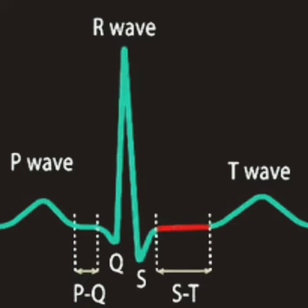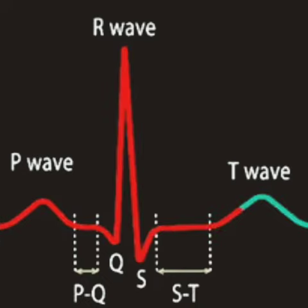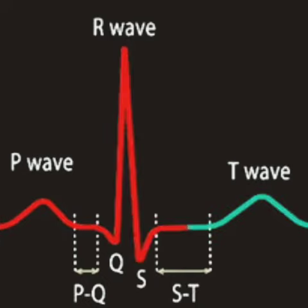Following the QRS complex, there is a long isoelectric period which extends from the end of the S wave to the beginning of the T wave, called the ST segment. The T wave is a rounded positive deflection.